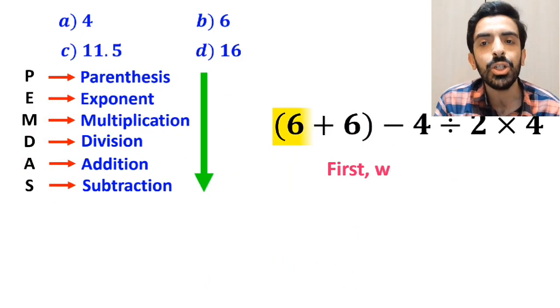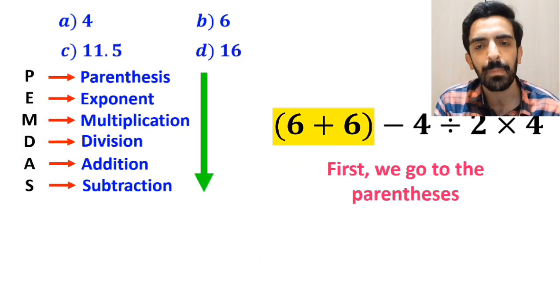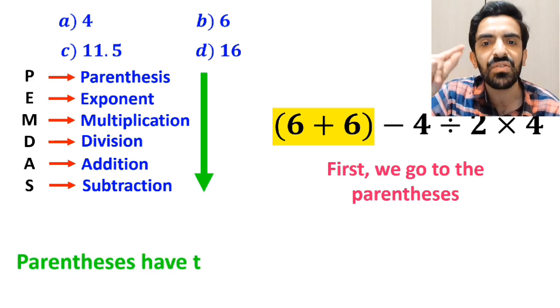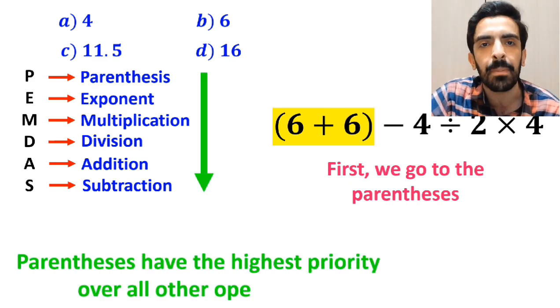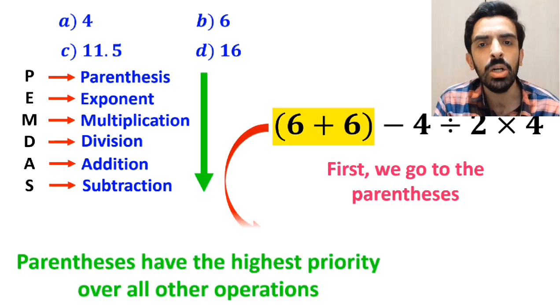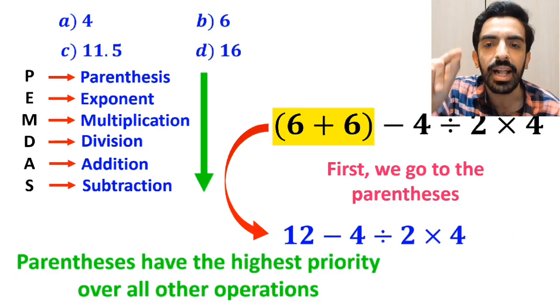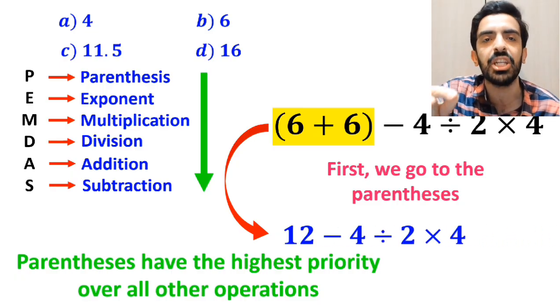First we go to the parenthesis, because according to the PEMDAS rule, parenthesis have the highest priority over all other operations. So we can write this expression as 12 minus 4 divided by 2 then times 4.